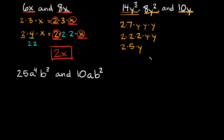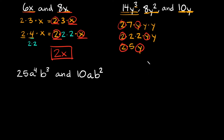Now circle all the numbers and variables they have in common. All three terms have a 2. The first term has a 7, but the other two don't. All three have at least one y — but the second extra y in 14y³ and 8y² isn't shared by 10y, so we only count one y. There's a 5 in 10y but not in the others. So all three share only a single 2 and a single y — the greatest common factor is 2y.